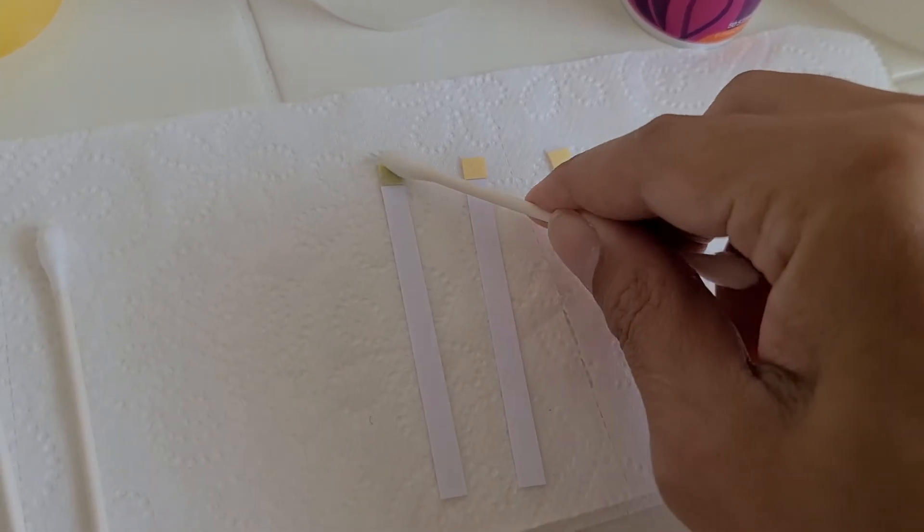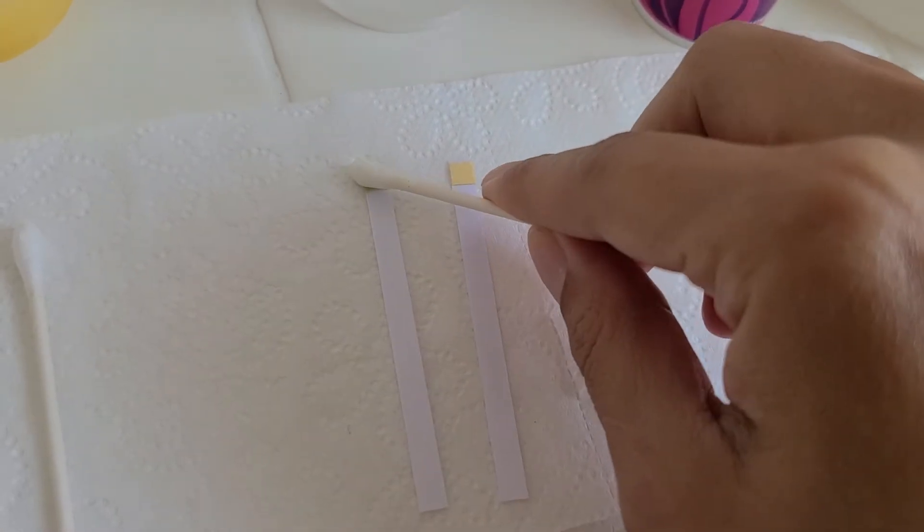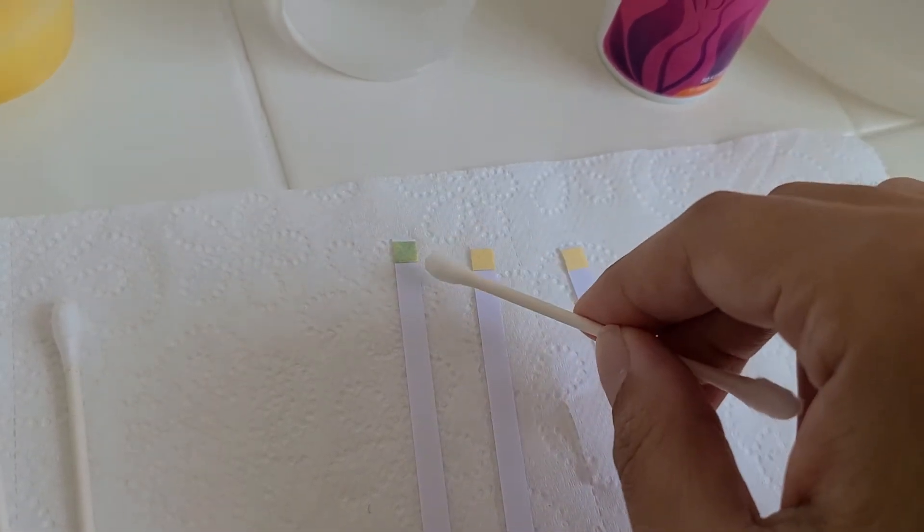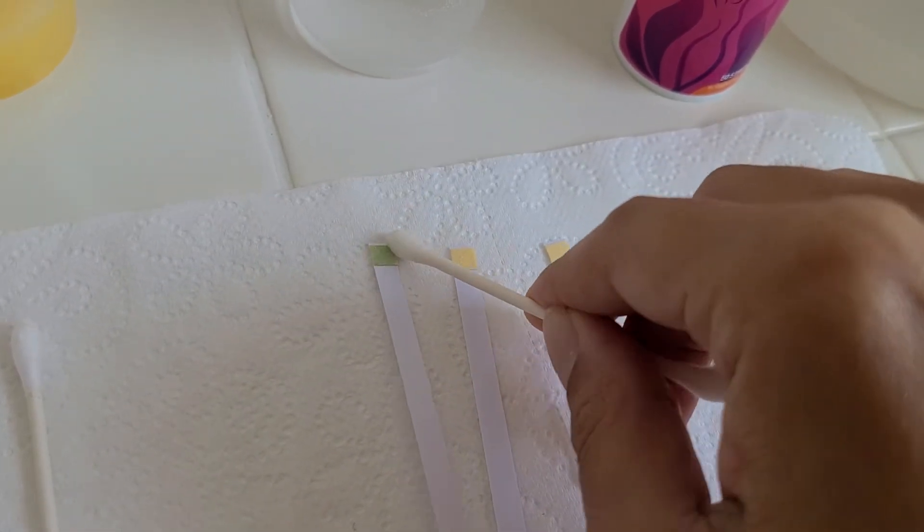And then you just simply smear it onto the strip like this, and then you'll see that as you do that the strip starts to change color.